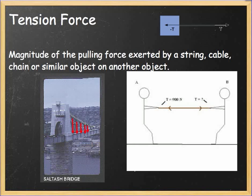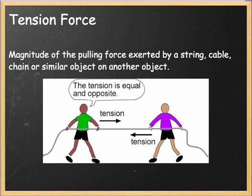Tension force is something a little different — the magnitude of the pulling force exerted by a string, a cable, a chain, or a similar object on another object. You can see examples with arrows in the top right-hand corner, the line in between showing forces going in opposite directions. There's a tug-of-war situation and a suspension bridge where strings hold up the bottom. Tug-of-war is a great example: anytime you get that team to move, your force is greater than theirs — you're unbalanced — and we can see tension force shown in a tug-of-war game.